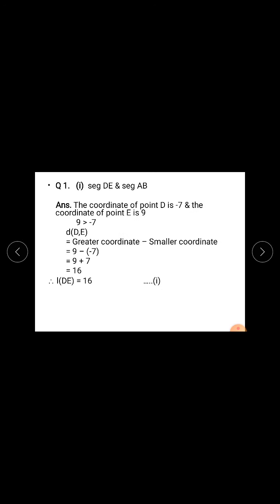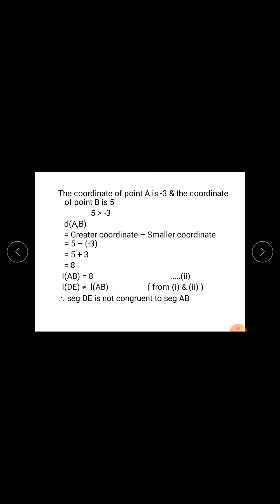Now compare equations 1 and 2. Length DE is 16 and length AB is 8. Since 16 is not equal to 8, length DE is not equal to length AB. Therefore, seg DE is not congruent to seg AB. Lengths are not equal, therefore the segments are not congruent.